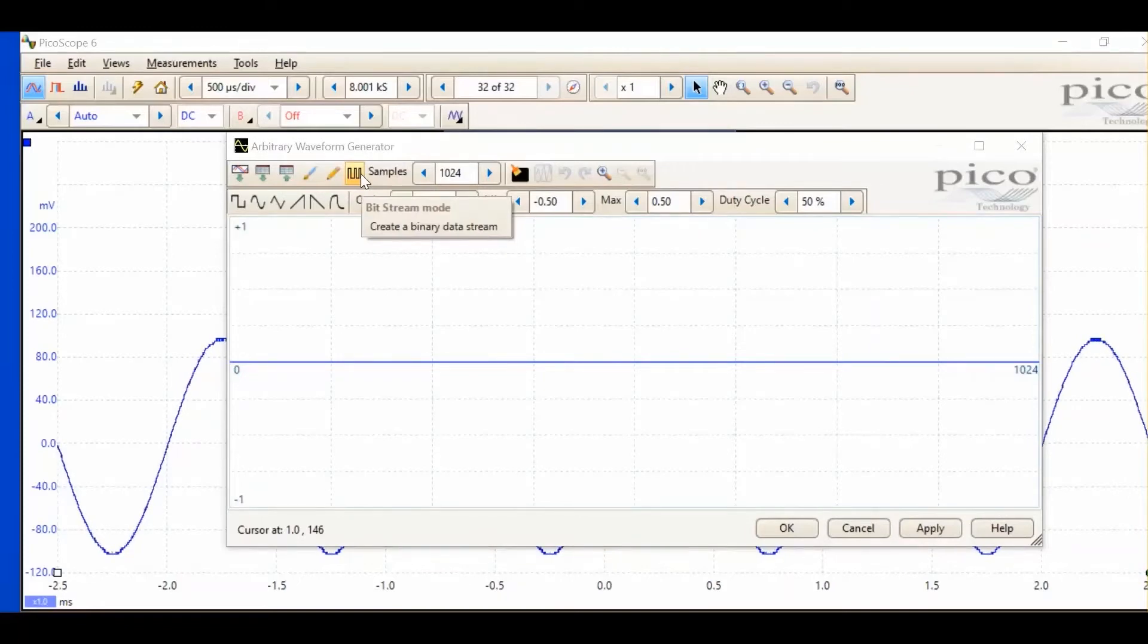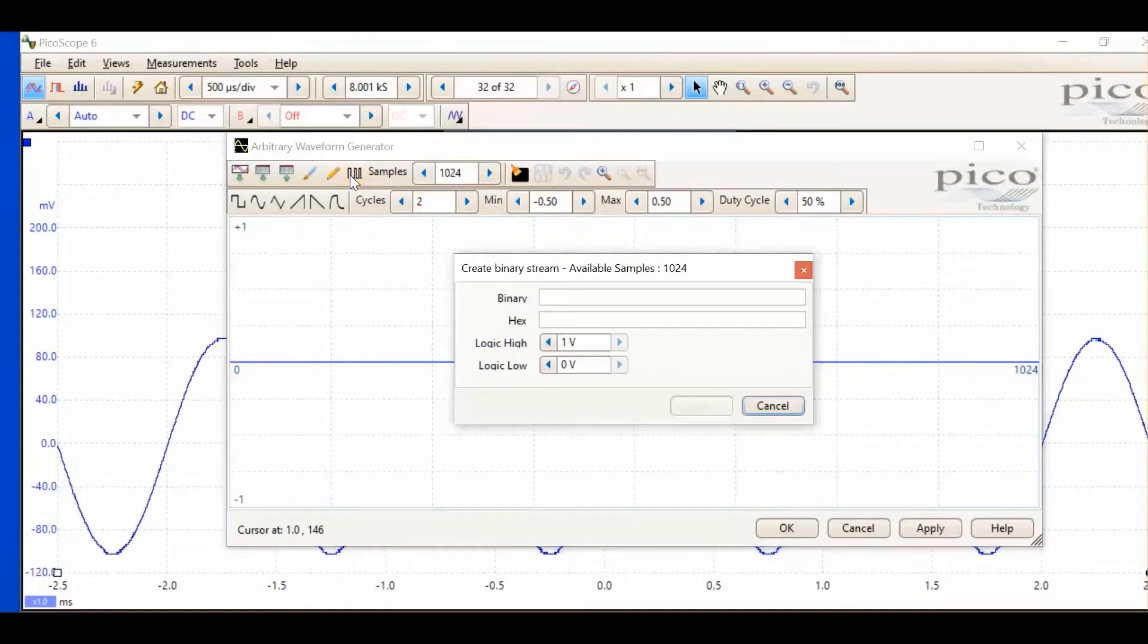Bitstream mode. So, if I click into this, we'll see this gives us the capability to create a bitstream either with binary or hex. And I'm just going to write some random binary here. And we can see the hex equivalent is automatically calculated.